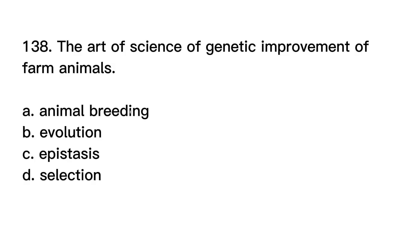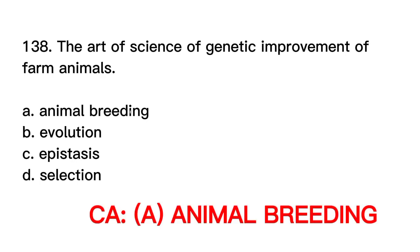Number 138. The art of science of genetic improvement of farm animals. A. Animal breeding. B. Evolution. C. Epistesis. D. Selection. Correct answer is letter A. Animal breeding.